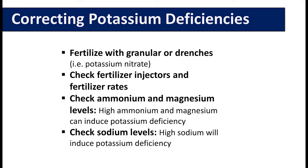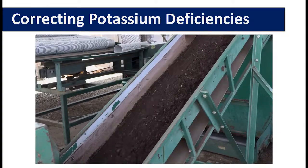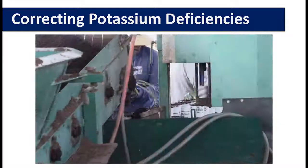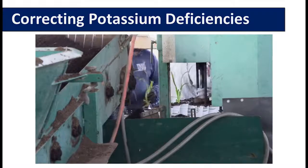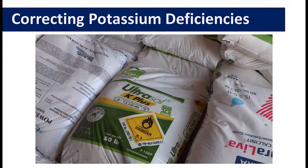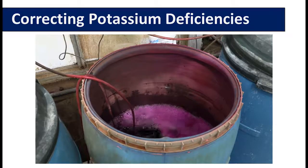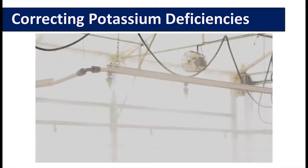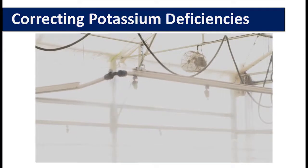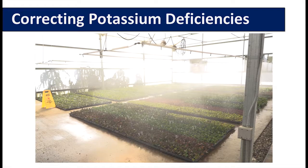To correct potassium deficiencies, check the fertilizer and make sure there are adequate amounts in your plant nutrition program. For example, if you have a deficiency symptom, you could apply a potassium nitrate solution or increase the amount of potassium in the fertigation system using nitrogen sources such as potassium nitrate. Check your fertilizer injectors for proper operation and settings or fertilizer application rate to make sure they are correct.